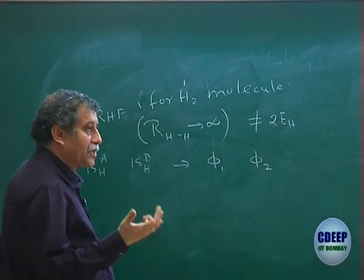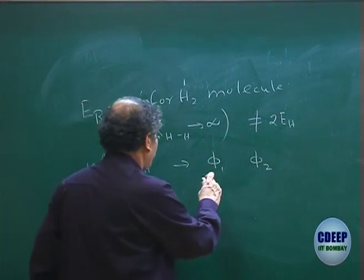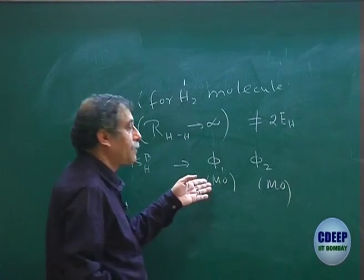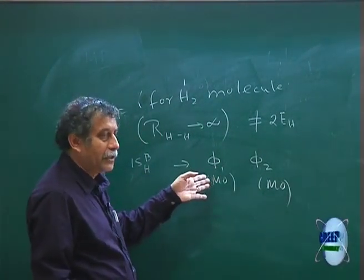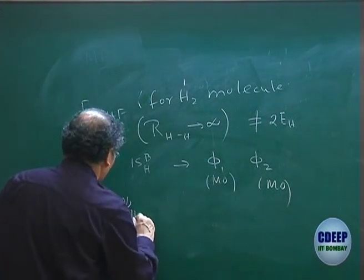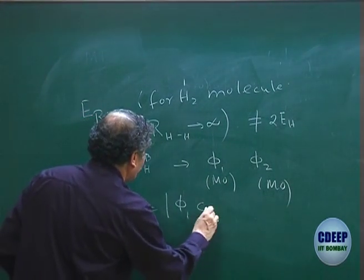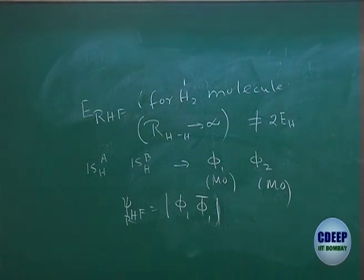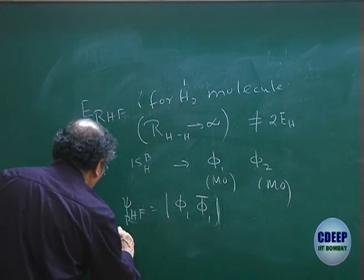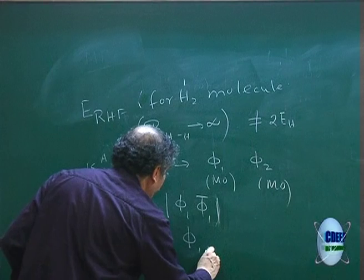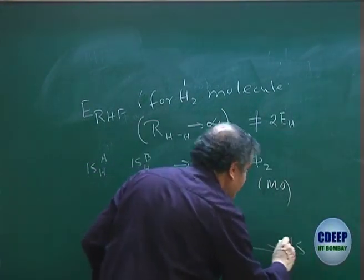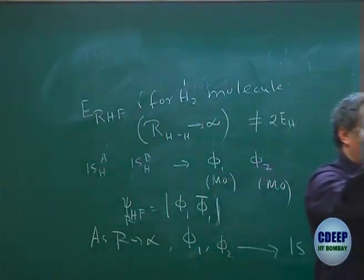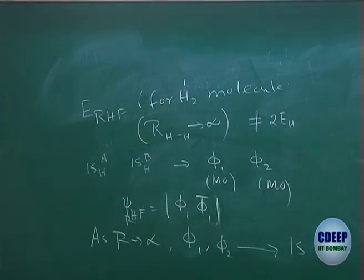As R goes to infinity, φ1 and φ2 go to the 1s atomic orbitals — not surprising, as there is no molecule at that point. In LCAO-MO, since atomic orbitals were used as a basis, there is a physical interpretation: MOs will eventually become AOs. So psi Hartree-Fock at R tending to infinity becomes |1s_H_A, 1s_H_A bar⟩ — both electrons in one 1s orbital — which is precisely the H⁻H⁺ configuration. This is a wrong asymptotic behavior.